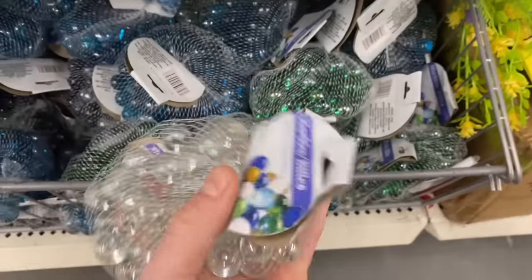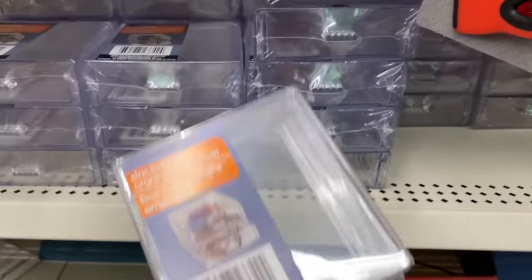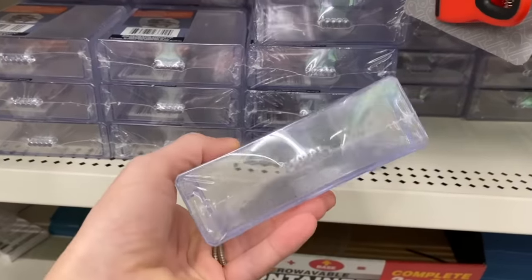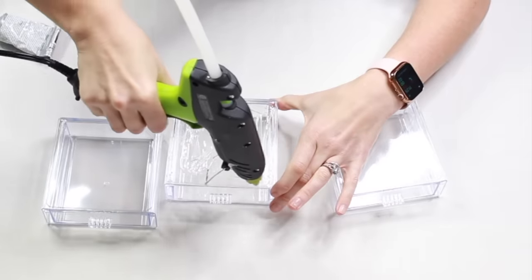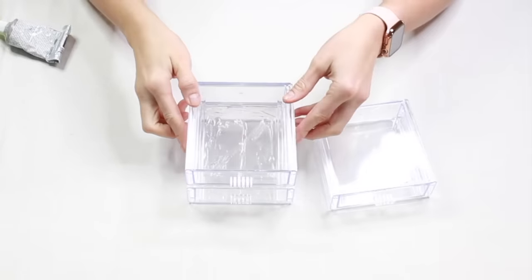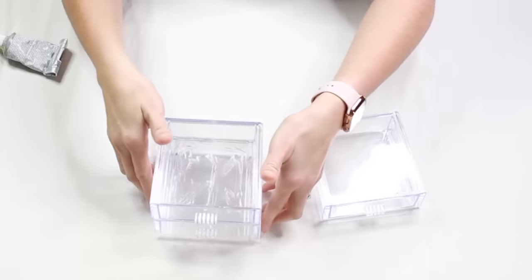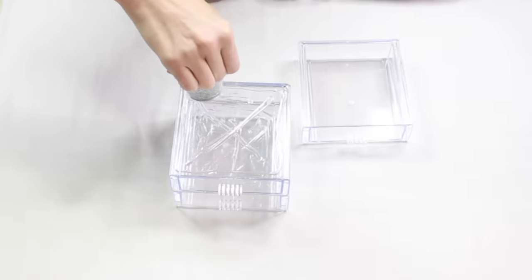We're going to start this project with these really handy stackable organizer drawers. I'm going to be using a combination of E6000 and hot glue. I'm going to go ahead and stack this on top. Then we're going to do the same thing on this top one.